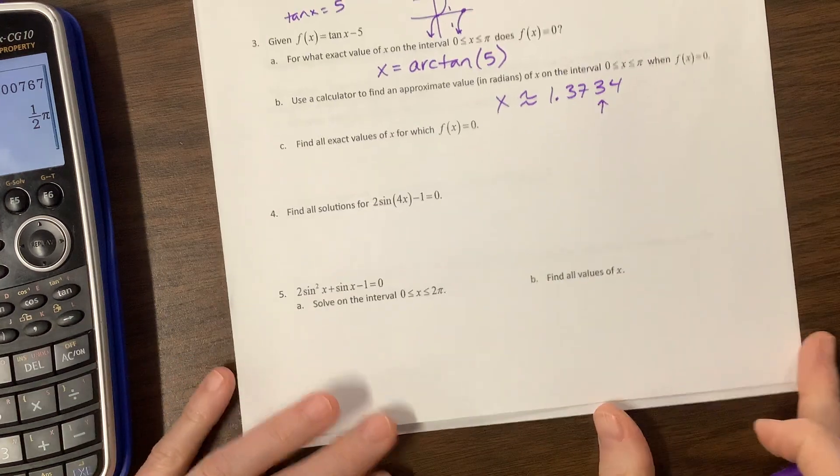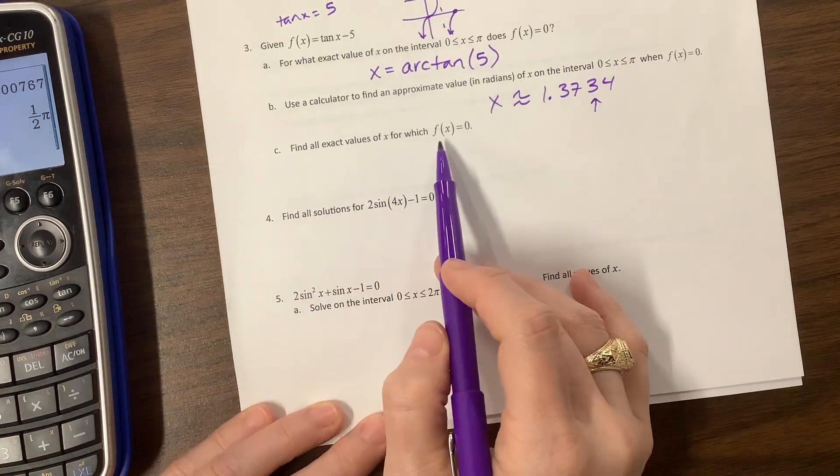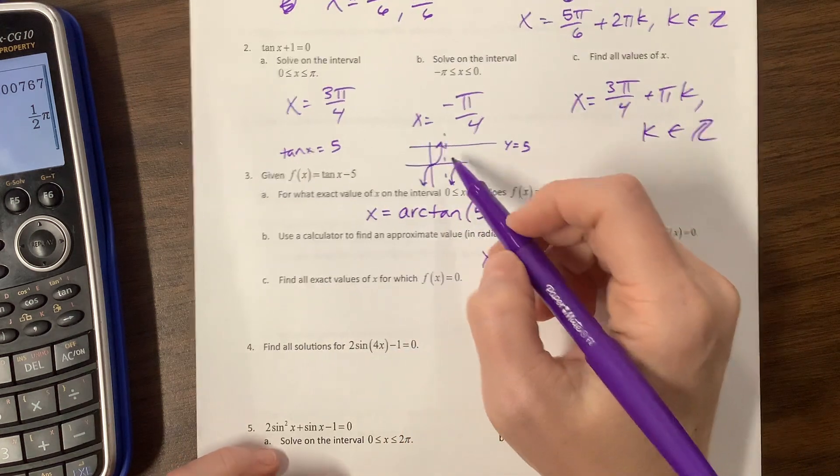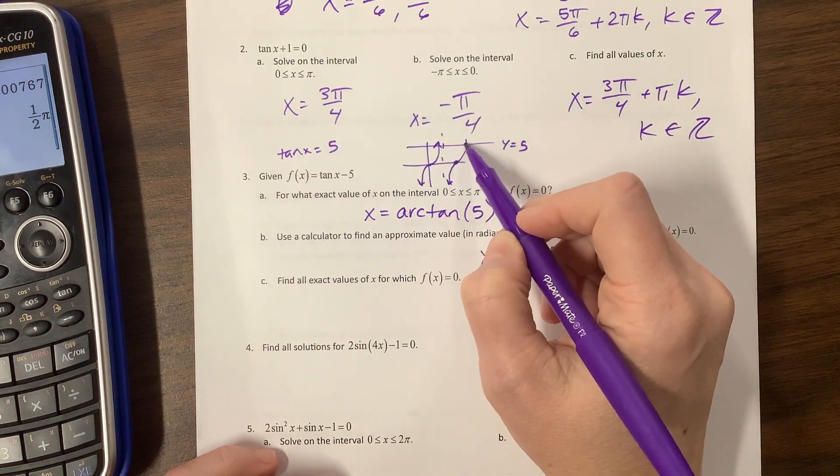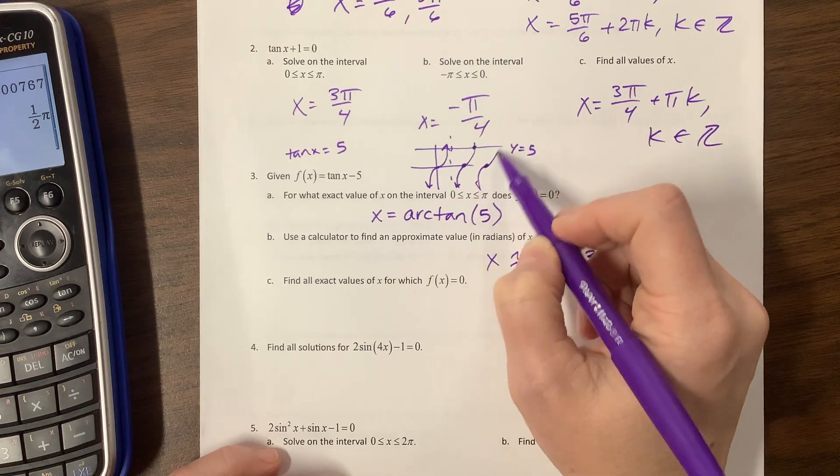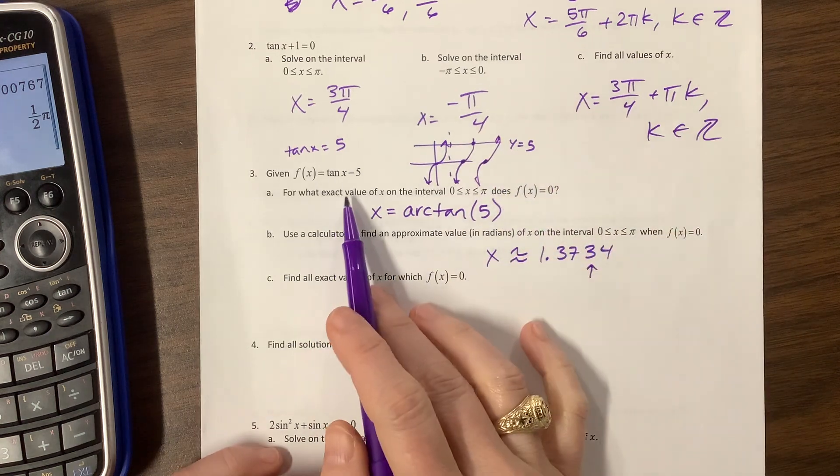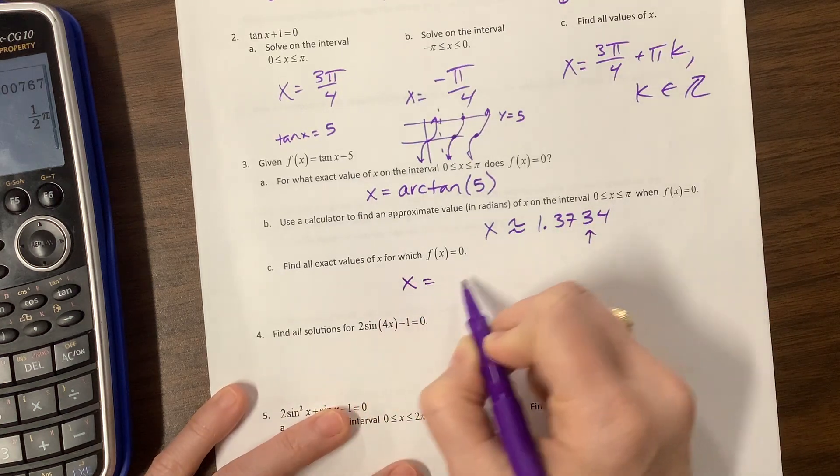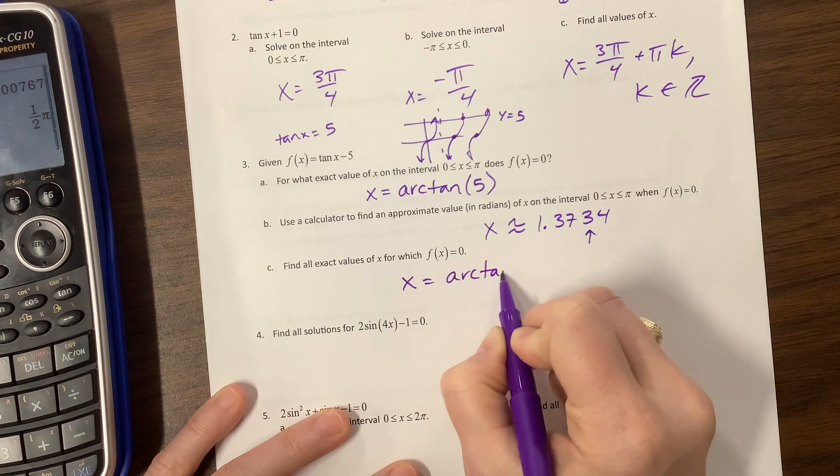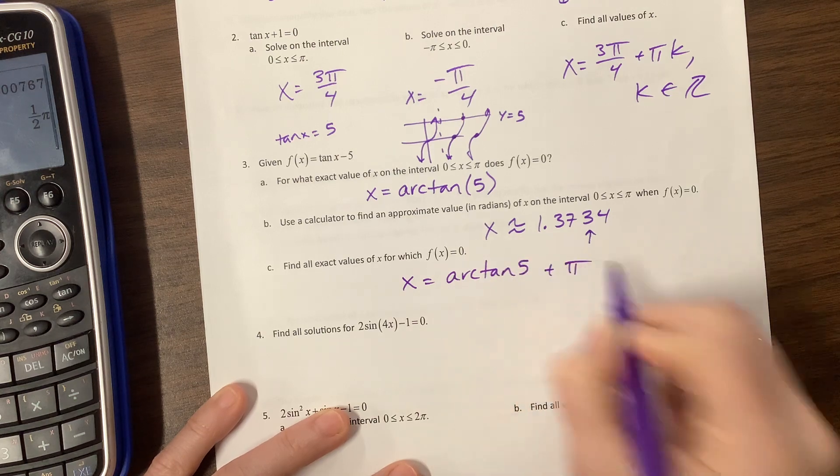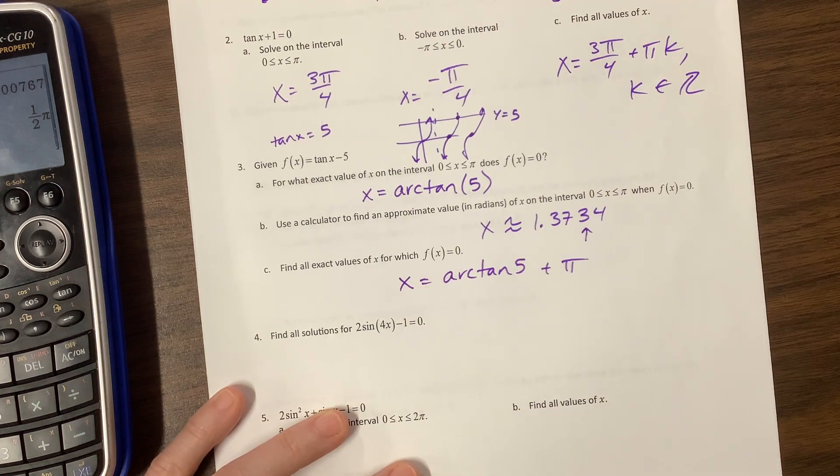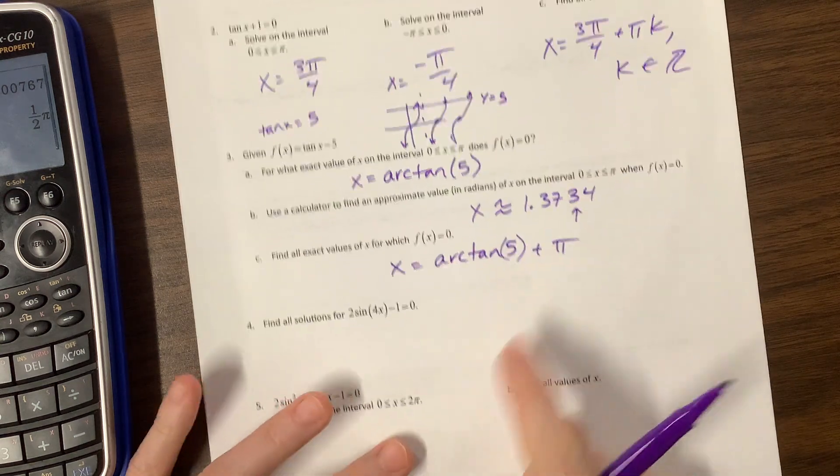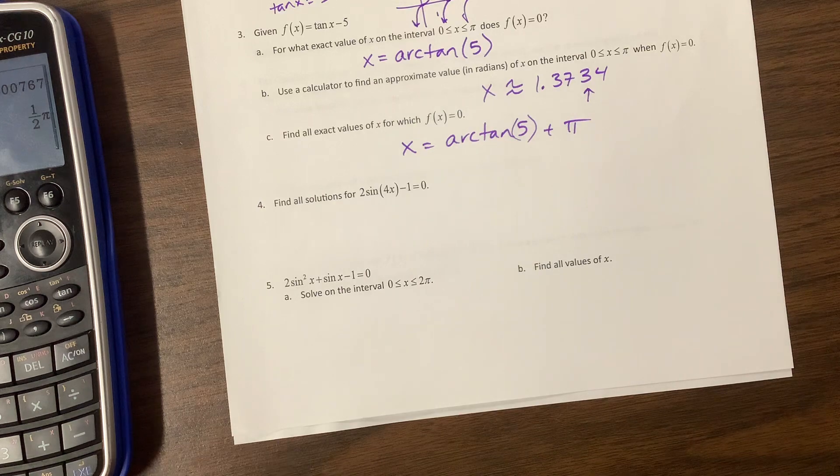Use a calculator to find, so x is approximately, we've got 1.3734. AP wants us to round to the third decimal place. If you put the fourth, then you'll always be right. Find all exact values. If they want all of them, notice they're going to occur every time, every new period. Well, they didn't change the period right here. So it's just going to be π units apart. So find all exact values. The exact values are arctan(5) + π. Because they're π units apart.